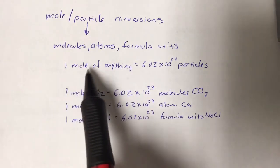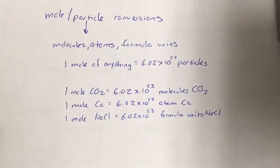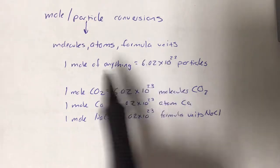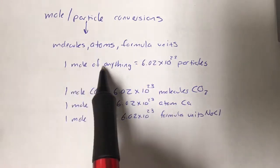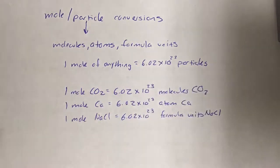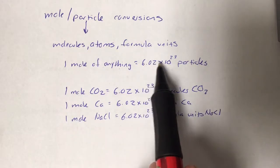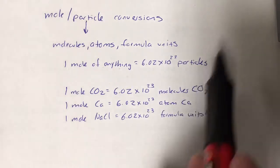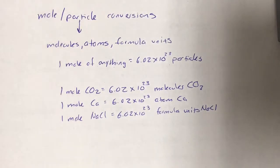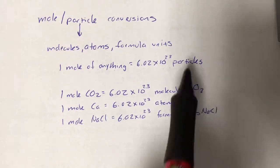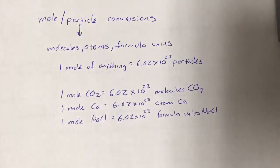The equivalence is always one mole equals 6.02 times 10 to the 23rd. It's a plain old counting unit like dozens or gross. It can literally be anything — you can have a mole of donuts: one mole of donuts would be 6.02 times 10 to the 23rd donuts. One mole of sand would be 6.02 times 10 to the 23rd grains of sand. This word changes depending on what we're dealing with.